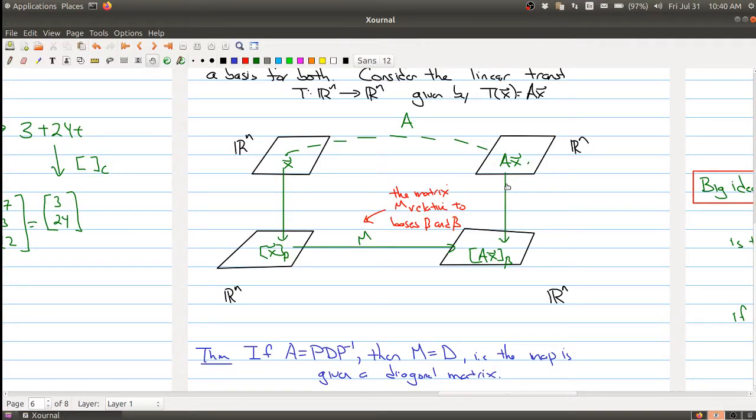So welcome to the last part of today's lecture. One of my last goals that I want to do today is to show you that if you have a linear transformation given by matrix multiplication A, you can change your basis so that the matrix M that you're using is actually a diagonal matrix.